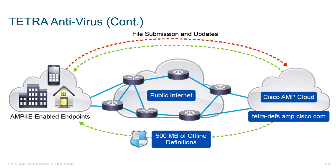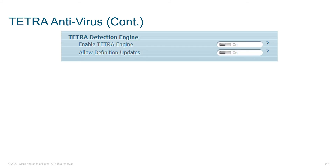For offline scanning, you'd have about 500 MB of definitions plus some temporary files you download — plan for about a gig of local disk space. As far as enabling or disabling Tetra, this can be done within the policies you create. You'll have different policies for different device types — maybe one for servers, one for workstations, and another for devices you're doing light testing on. The Tetra engine can be enabled along with allowing definition updates.